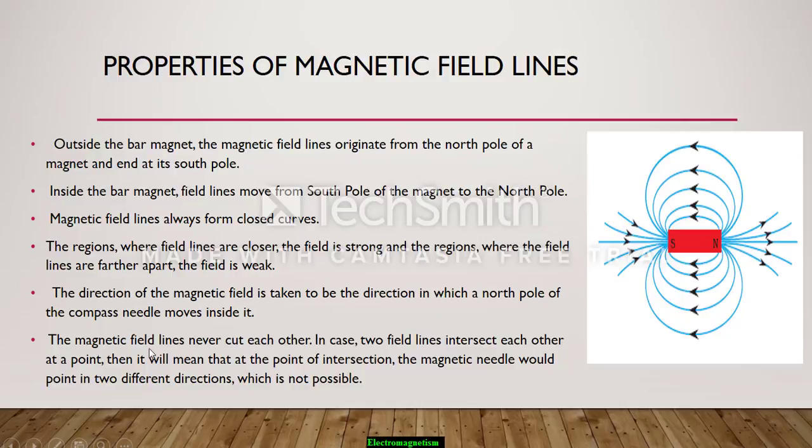The magnetic field lines never intersect, never cut each other. In case the two field lines intersect each other at a point, then it will mean that at the point of intersection the magnetic needle would point in two different directions, which is not possible. So remember this thing: they never intersect with each other.